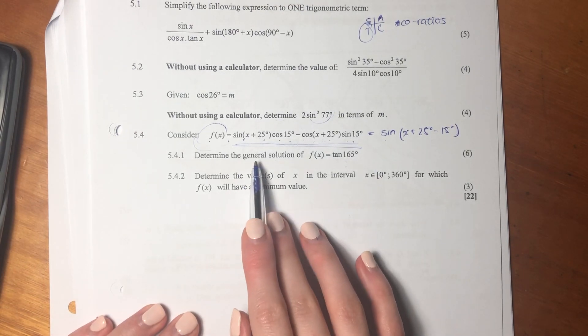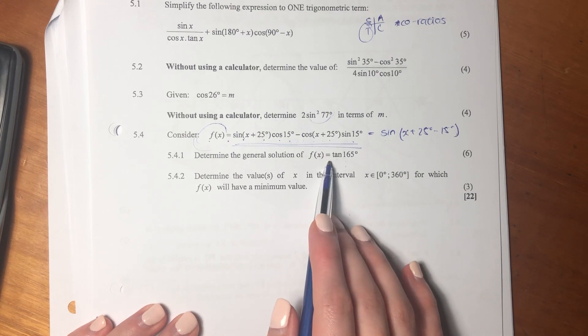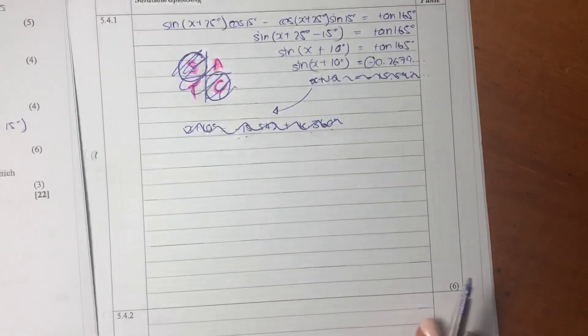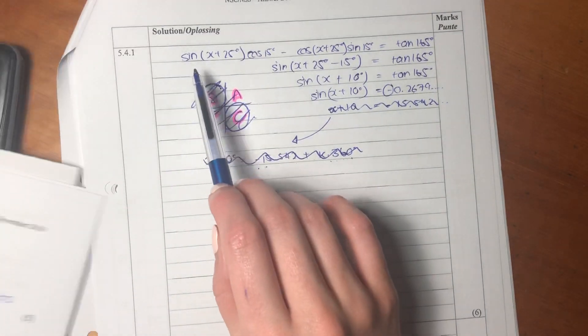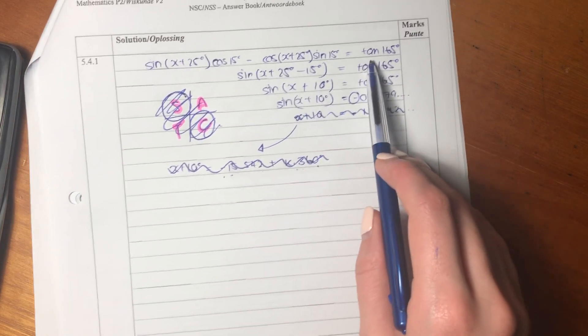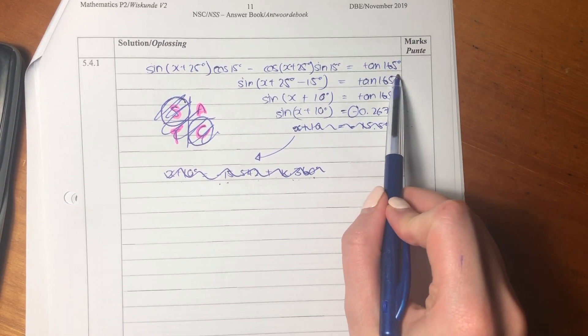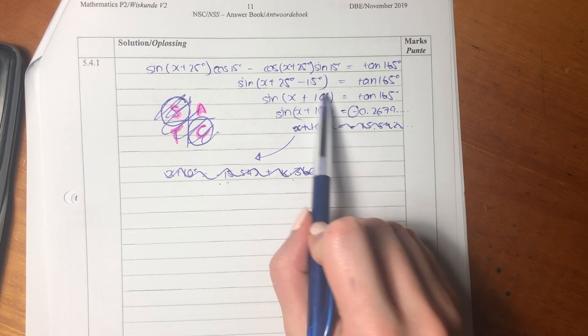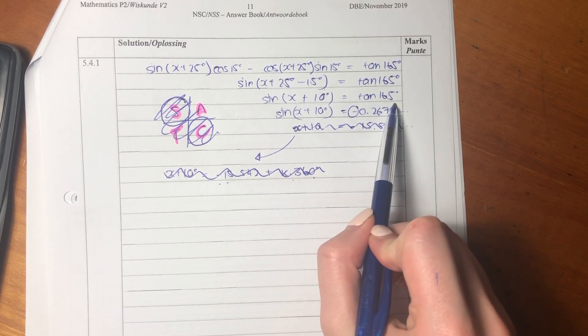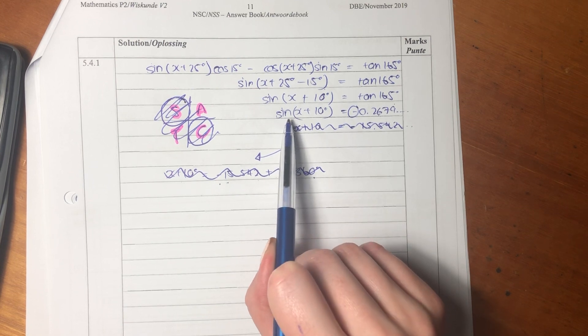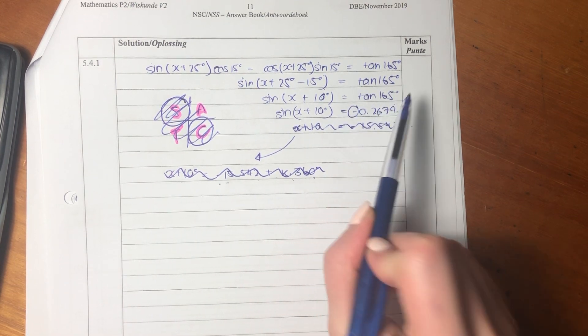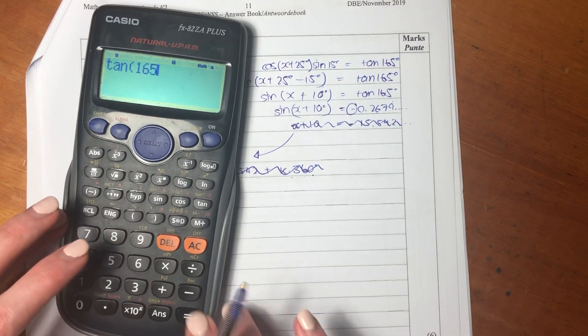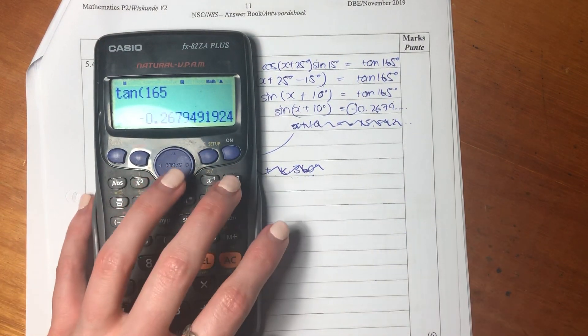Then it says, determine the general solution of f of x equals tan 165. So now what I've done is I've written out the equation that we had there and I've set it equal to tan 165. I've simplified it using that identity I showed you. That becomes x plus 10 equals tan 165. Now, we know that I've simplified tan 165, put that into my calculator. And it gives us that, okay?